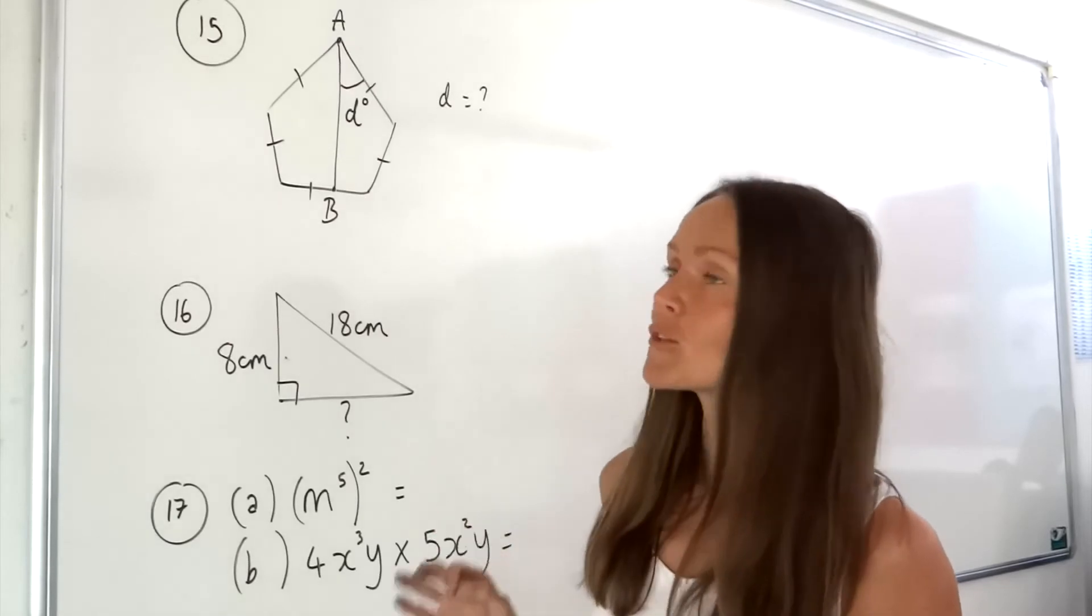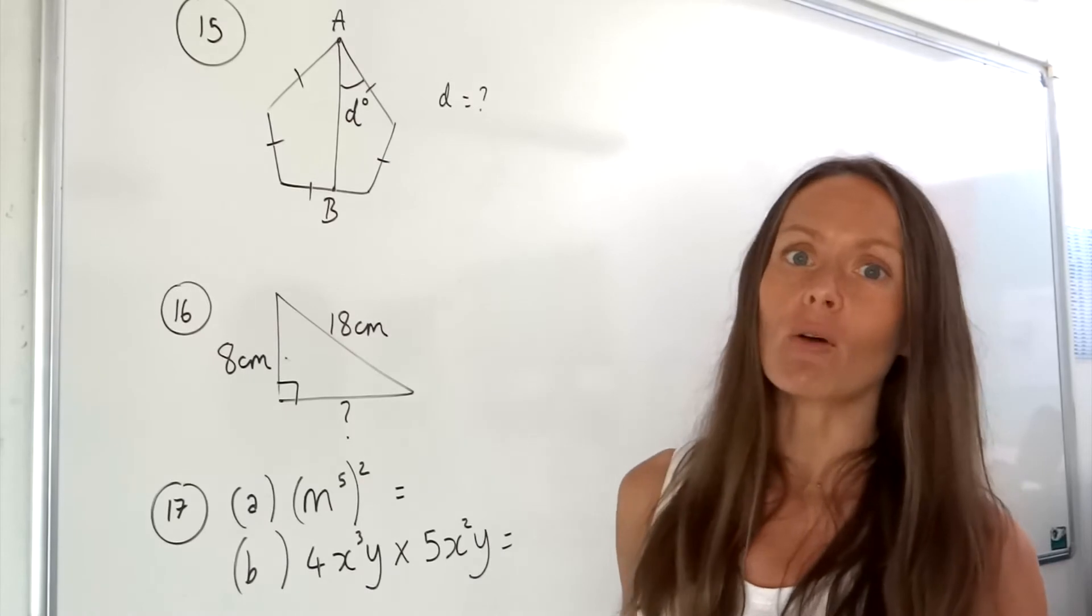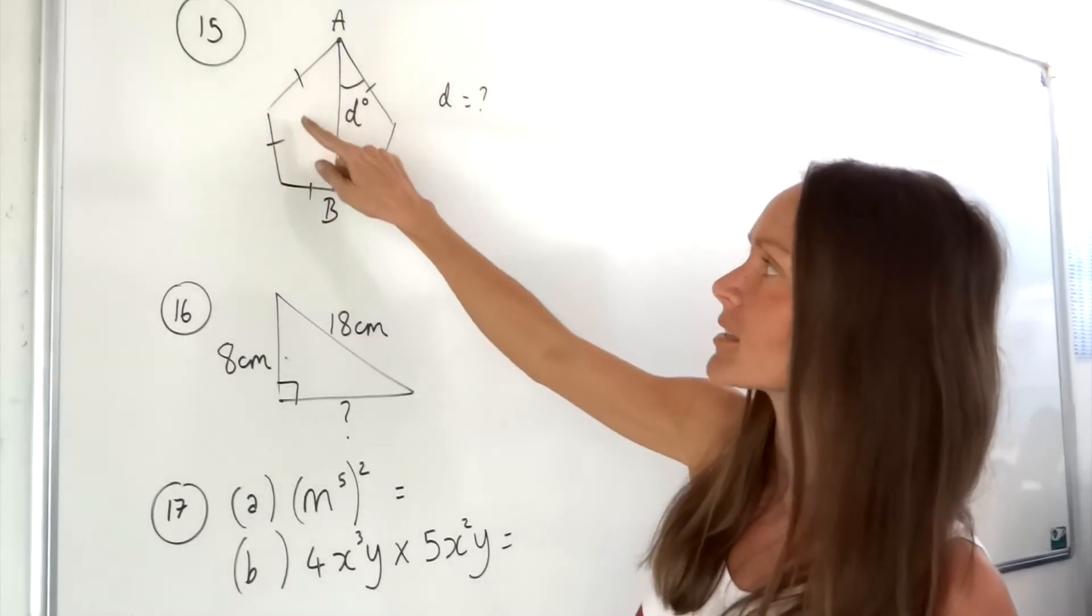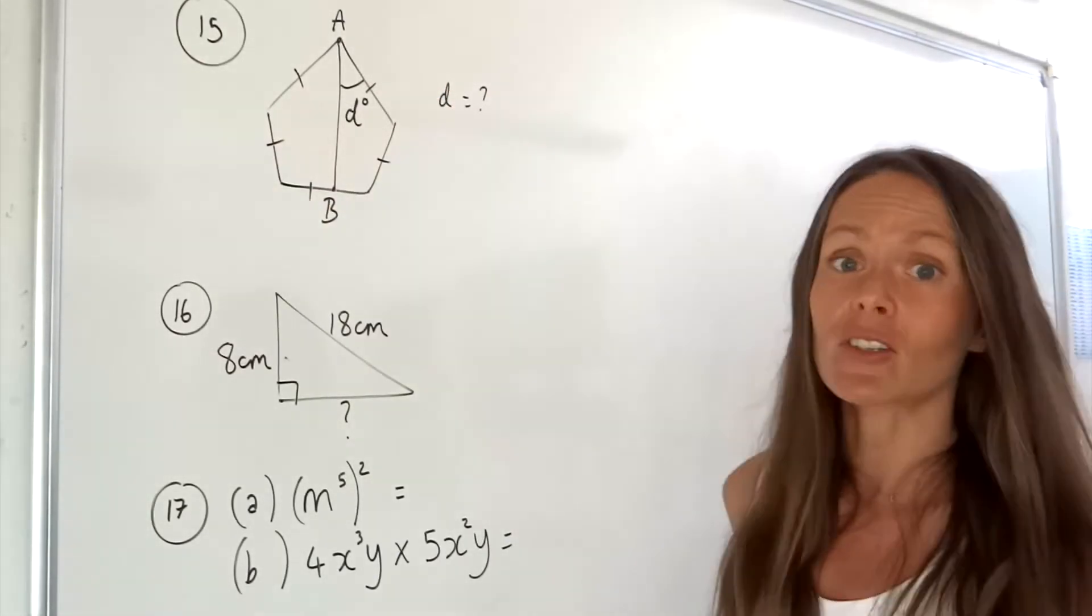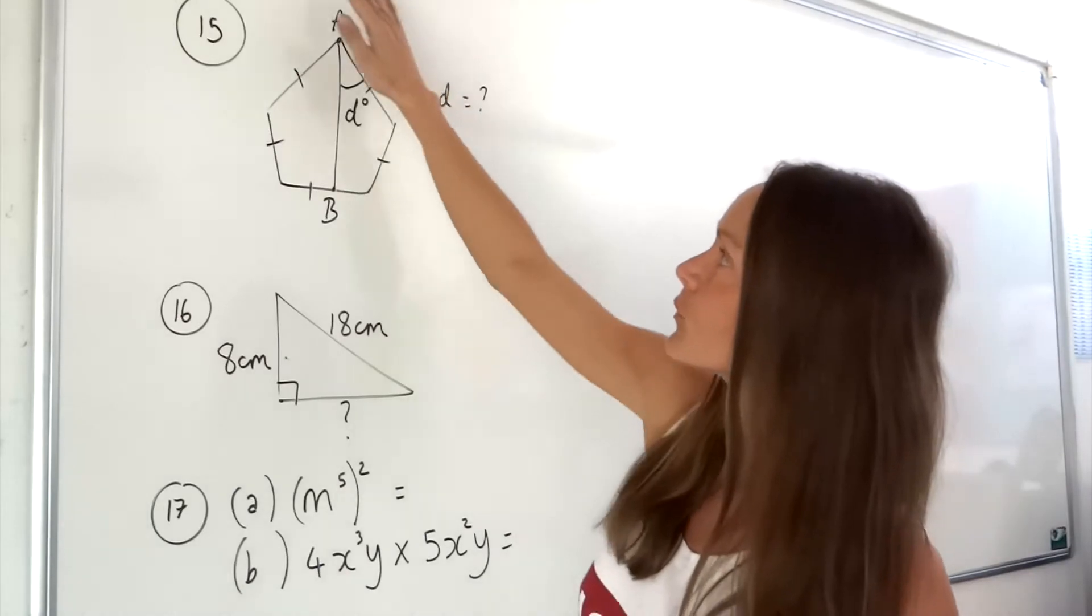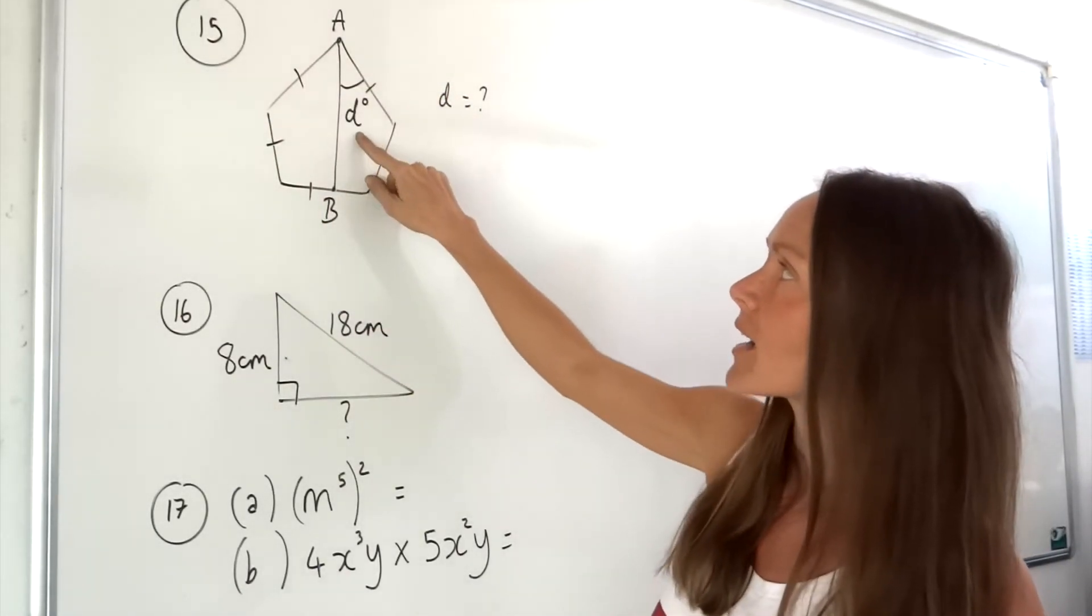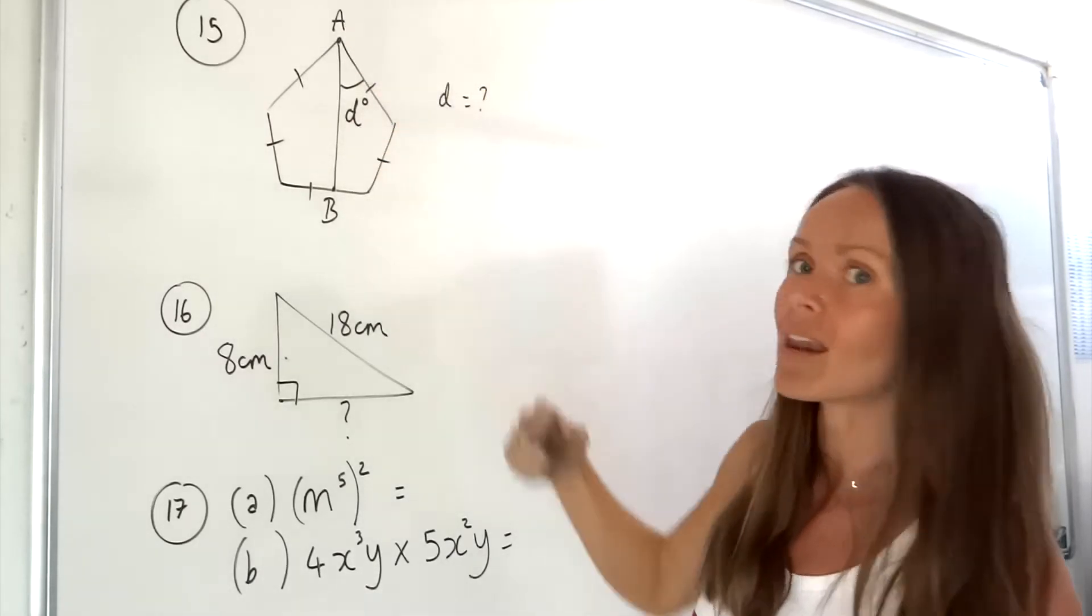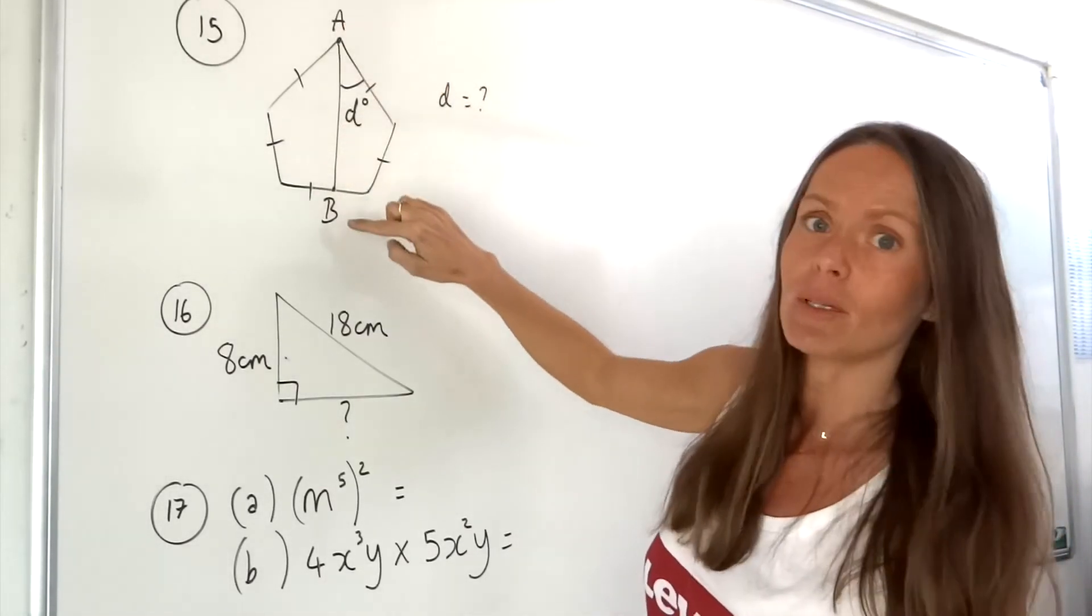In question 15 we're given a regular pentagon, so regular just means that all the sides are equal in length. I've just put these little dashed lines on there to show that. The pentagon is a five-sided shape. They give you that diagram there, we have to work out this angle here d, and they tell us that AB is a line of symmetry so that means it's cut directly down the middle.